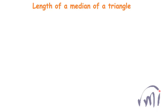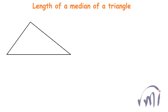Here we are going to derive the formula to find the length of the median of any given triangle. Let this be triangle ABC, and if D is the midpoint of side BC, then the line joining vertex A to point D will be known as the median from vertex A.